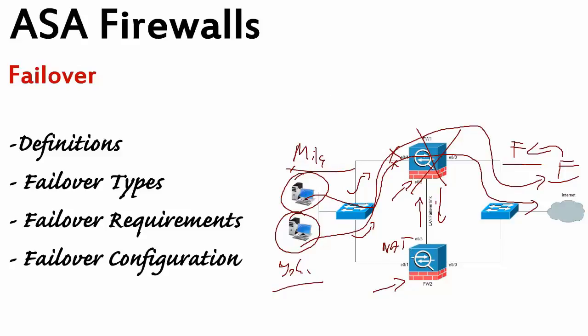Bear in mind that not everything can be exchanged between firewalls. Things like routing tables and user authentication tables will not be sent to the standby unit. What the standby will receive includes NAT translations, TCP connection states, the ARP table, and HTTP connection states — a lot of important information sent down to the standby unit.